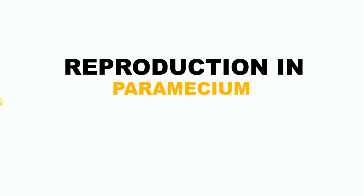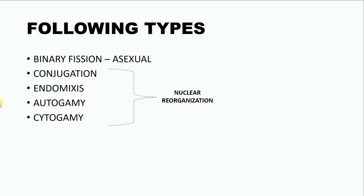Hey guys, welcome back. Today we will be looking at various methods of reproduction in paramecium. The most common method is the asexual method of binary fission. I have already done a video on this, you can check it out.